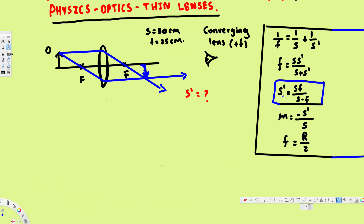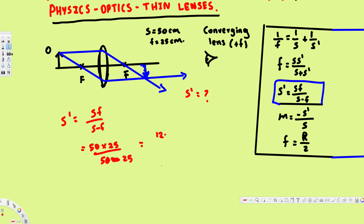The image distance equation is: s' = sF / (s − F). Plugging in our values: s' = (50 × 25) / (50 − 25) = 1250 / 25 = 50 centimeters. This confirms the image distance is 50 centimeters.